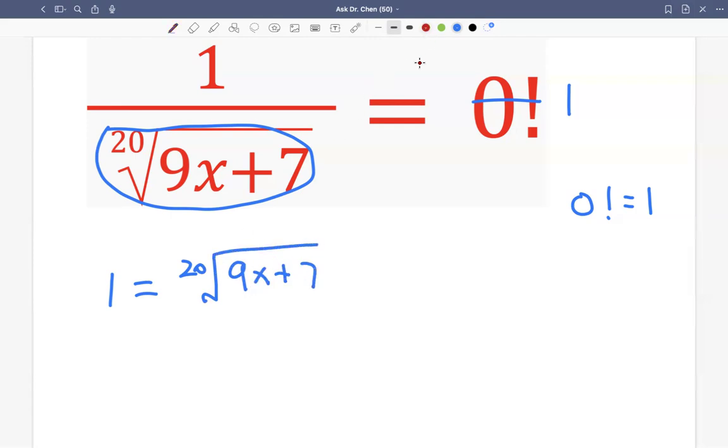Now we just raise both sides by 20th power. 1 raised by any number would still be 1. Then 20th root, 20 divided by 20 is 1. So we get 9x plus 7 raised by 1.